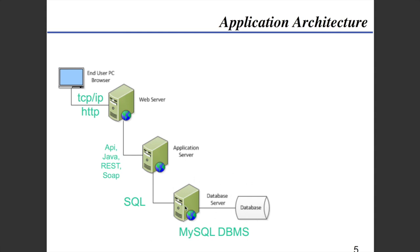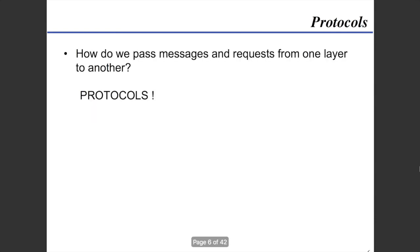The database will be hosted on a database server, and today what we're going to be taking a look at is the web server and application server. We have the API, Java, REST, SOAP, and then TCP/IP — that's more the low-level protocol that your computer works on — and then HTTP, which is how it makes requests to the servers.